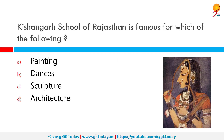The Kishangarh school of Rajasthan is famous for which of the following? It's famous for its paintings. The Kishangarh school of art is notable for its elongated style with arched eyebrows, lotus-like elongated eyes, and a pointed chin. It is a highly idealized facial form reminiscent of Indian sculpture, and a famous example is the painting Bani Thani.